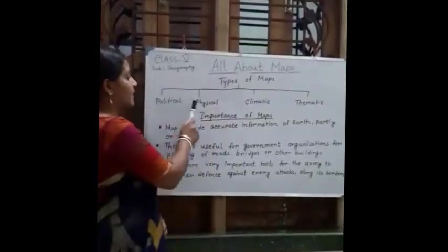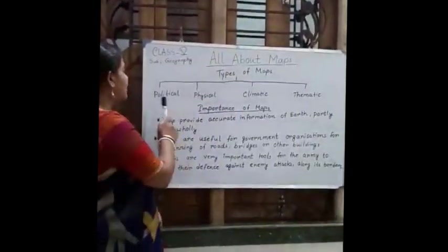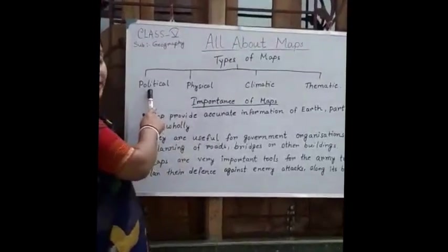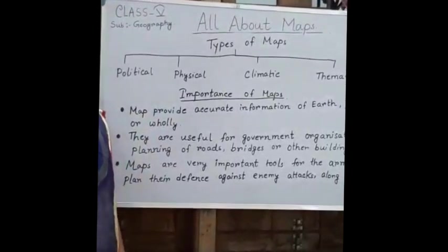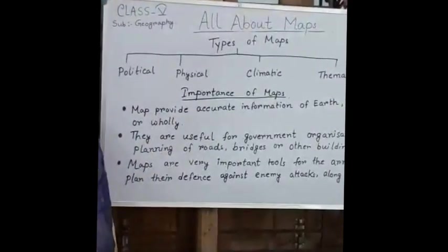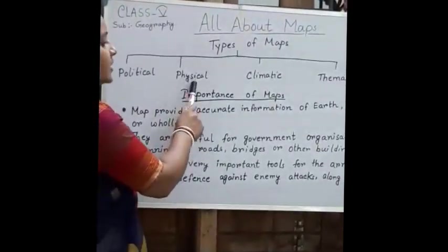Let's go to types of maps. What types of maps are being discussed? Number one is political maps. It shows countries, cities, states, history, etc.